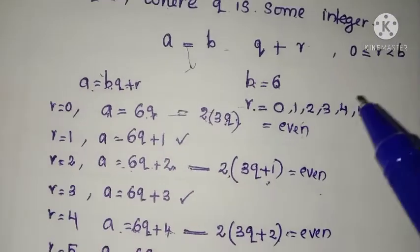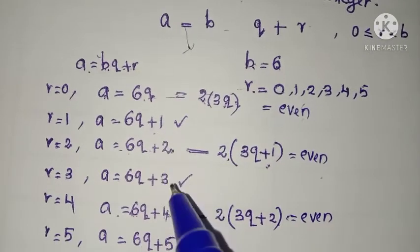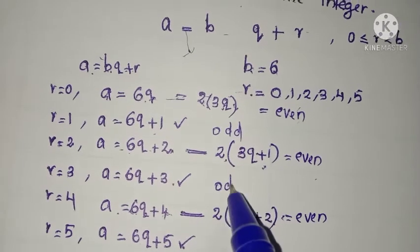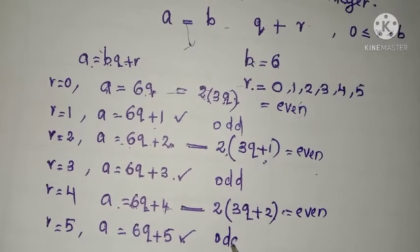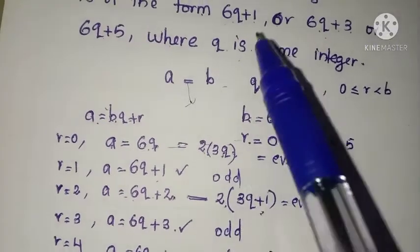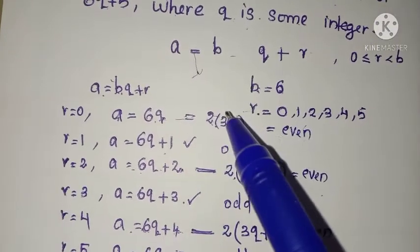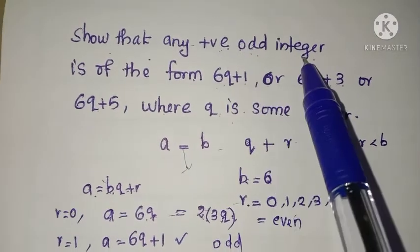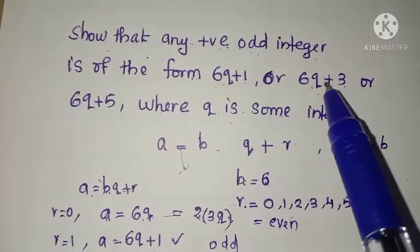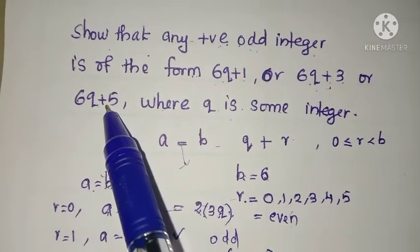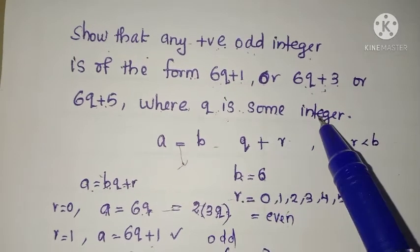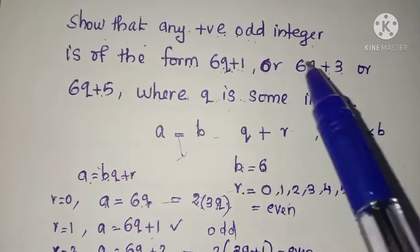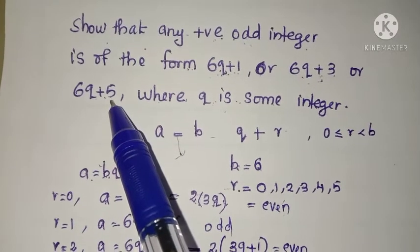If we put any value for q, you can see these 3 numbers — 6q plus 1, 6q plus 3, and 6q plus 5 — are odd numbers. These 3 are odd integer forms. So that answers our question: any positive odd integer is of the form 6q plus 1, 6q plus 3, or 6q plus 5, where q is some integer.